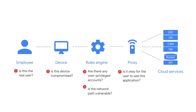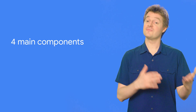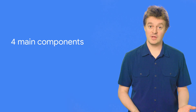For example: Is this employee a real user? Is the device they are using known, or has it been compromised? Is the network path vulnerable? And finally, given all that data, should the user be allowed to access the applications? This is done through a set of four main tools.